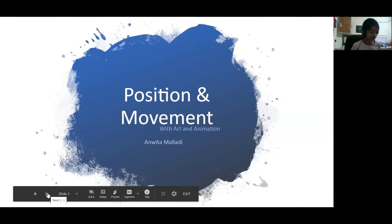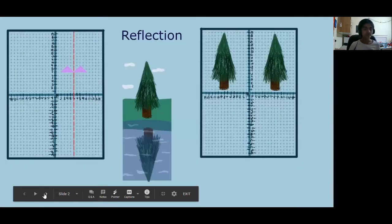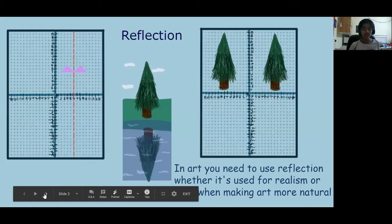Position and movement with art and animation. Reflection in art—you need to use reflection whether it's for realism or even when making art look more natural. Have you ever seen a painting of Bob Ross?